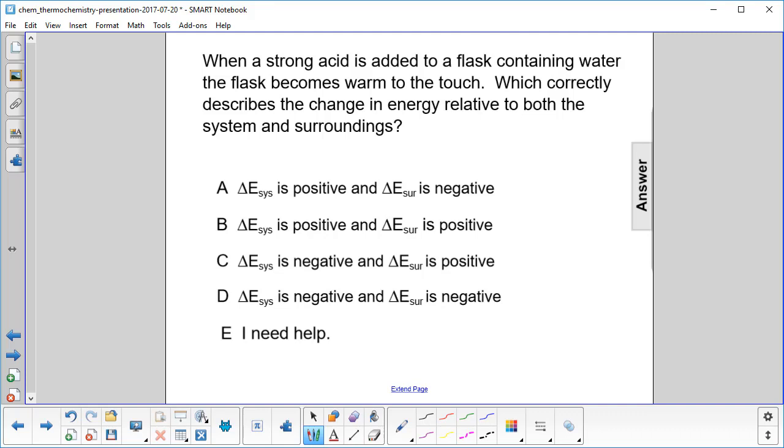When a strong acid is added to a flask containing water, the flask becomes warm to the touch, which correctly describes the change in energy relative to both the system and the surroundings.